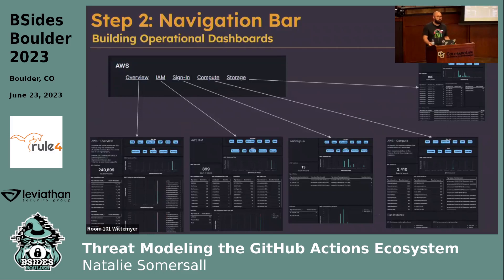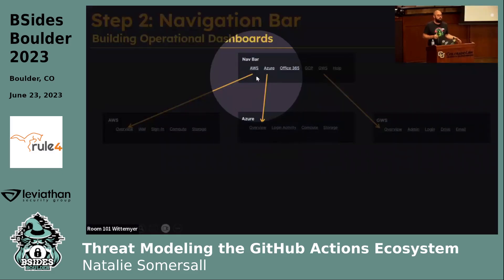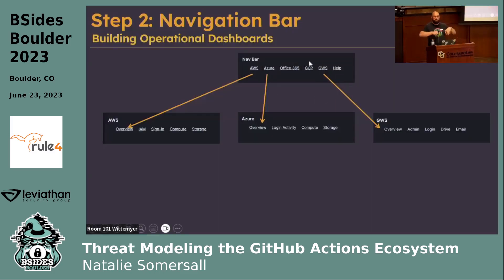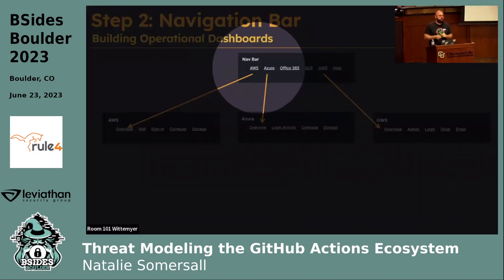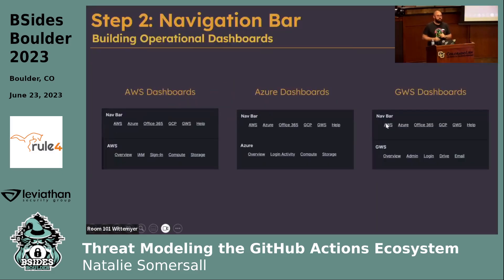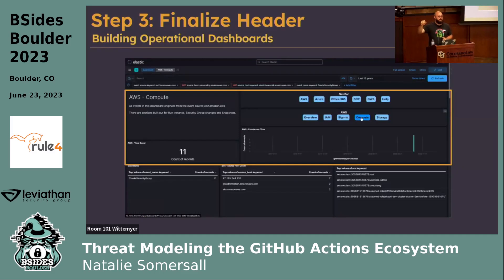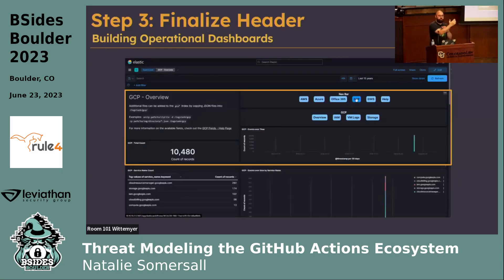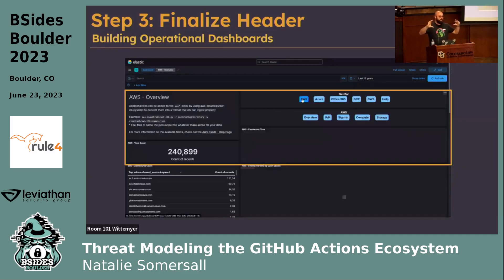This navigation bar is pretty straightforward — you build links to individual dashboards like overview, IAM, sign-in, compute, and storage. If you have more than one data type, build what I call a global nav bar. Maybe you have AWS, Azure, O365, GCP — build that global nav bar along the top linked to overview dashboards for each service. You end up putting two nav bars on every dashboard: a global one and a service-specific one. It feels very cohesive, and you can navigate between AWS services and pivot over to GCP all in one small area.